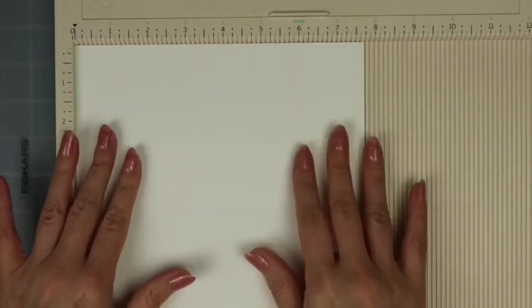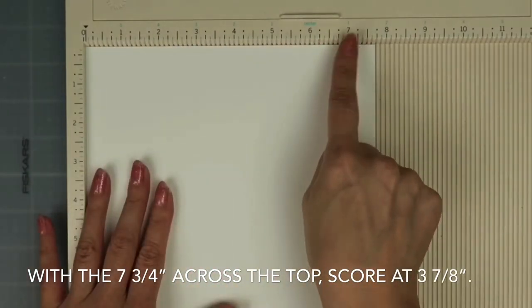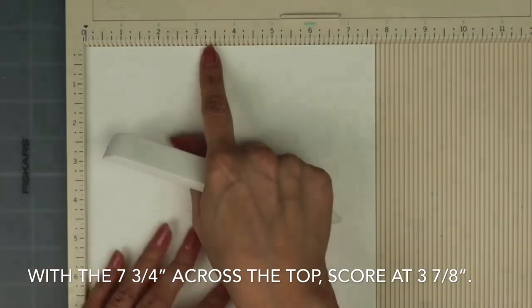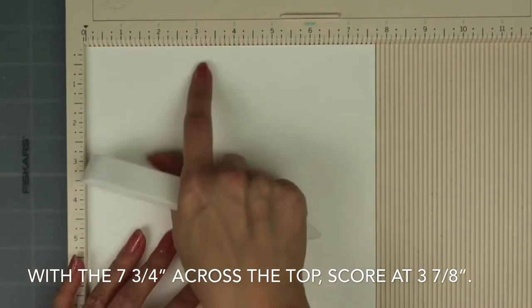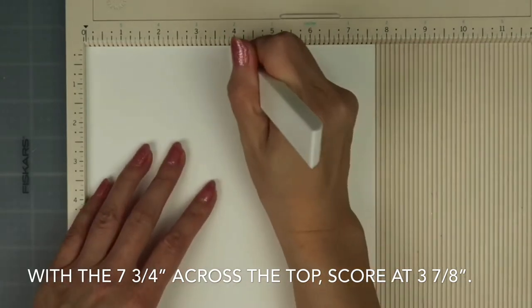In your scoreboard with the seven and three quarters inch across the top, we are going to go ahead and score it in the middle at three and seven eighths. So that is one notch right before the four inches.